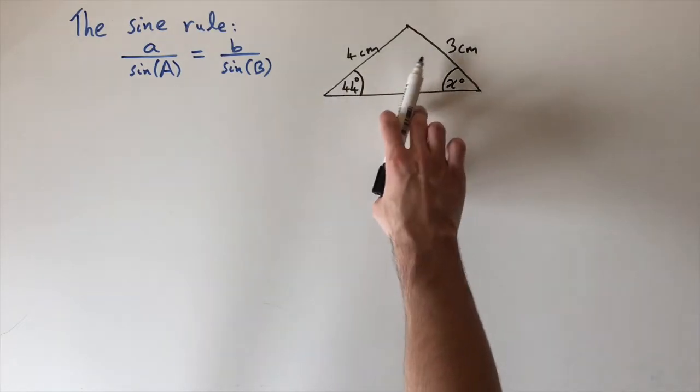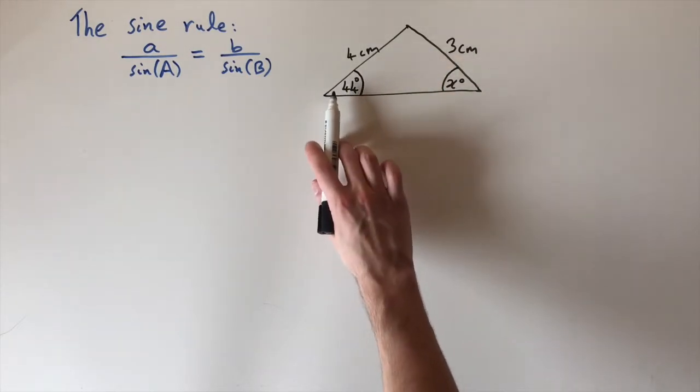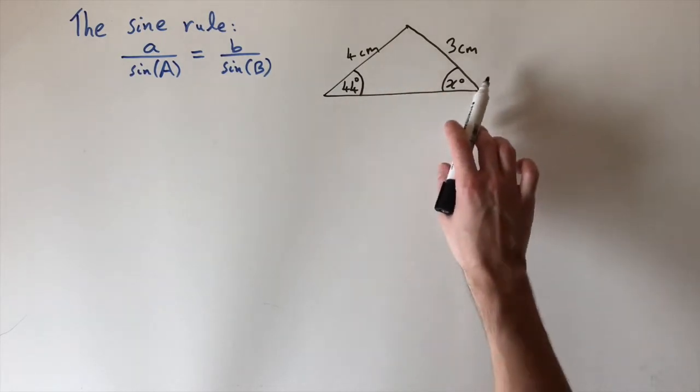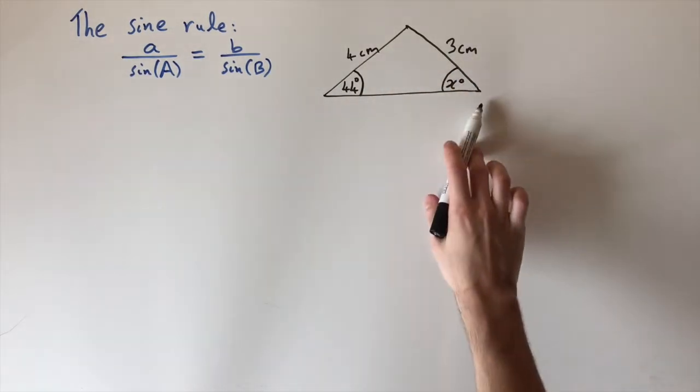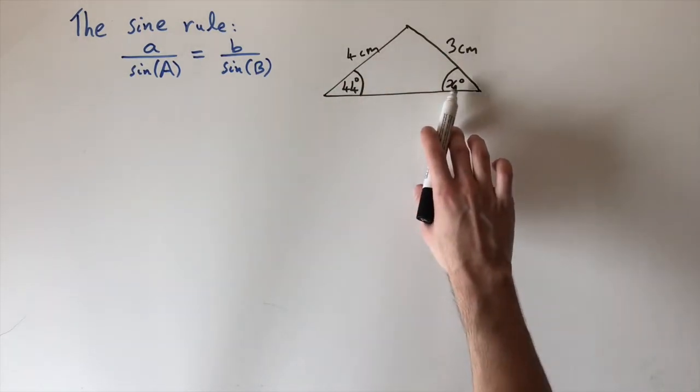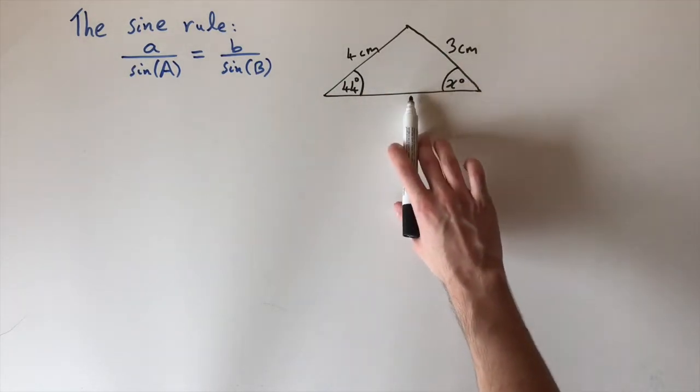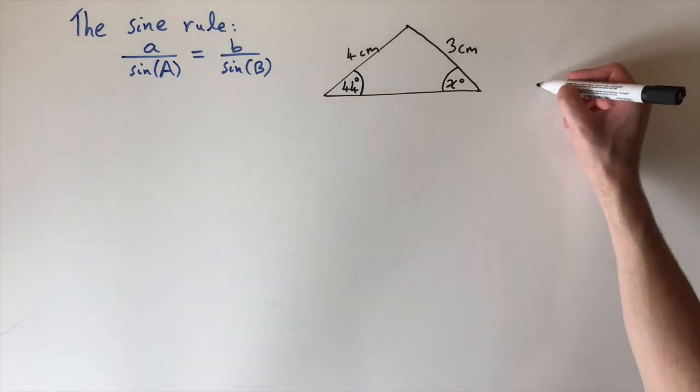the one opposite the side of length 3 centimeters is equal to 44 degrees. Now the problem is to find the angle x. The thing about this triangle is there are two ways to draw it. I could draw it like this where x is acute, so less than 90 degrees, but we could also draw it